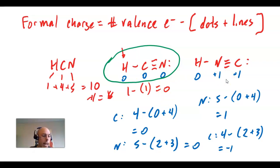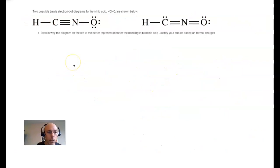I'm going to take you now to an AP exam question as one more example, then we'll give you two practice problems to try on your own, and that'll wrap up this lecture. Here's an old question from an AP test: two possible Lewis diagrams for fulminic acid, HCNO, are shown below. Lewis structures are drawn for us. Explain why the diagram on the left is a better representation of the bonding and justify the choice based on formal charges. What we want to do is justify that this left-hand Lewis structure has formal charges closer to zero, or they're all zeros, more so than the one on the right. Let's calculate formal charges for all these atoms in both Lewis structures.